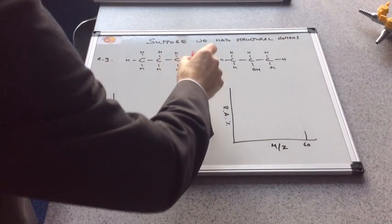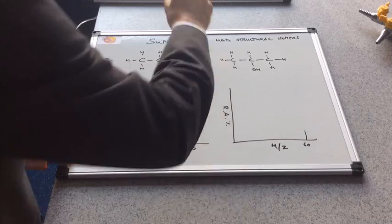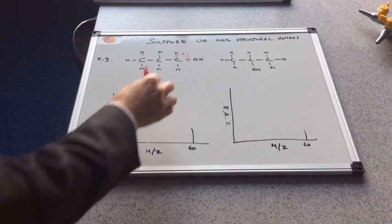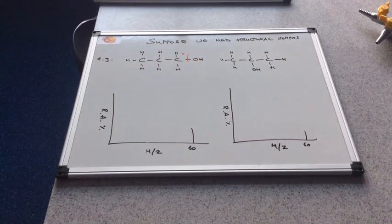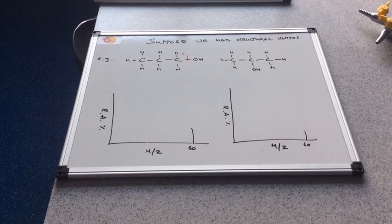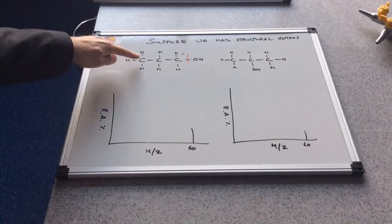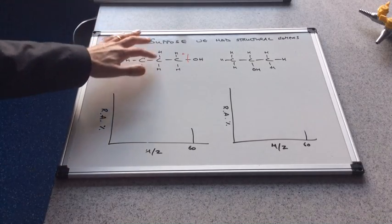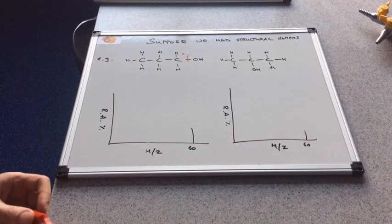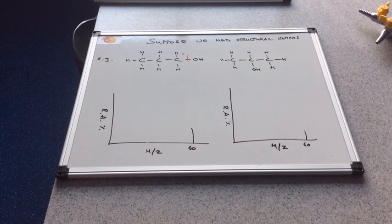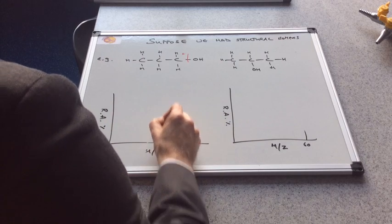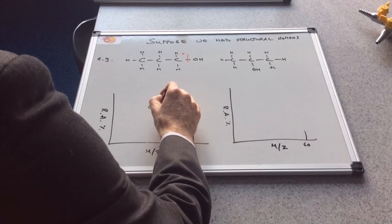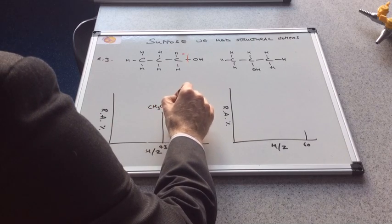We need to be thinking about what fragments are on one of the isomers that wouldn't be present on the other one. We're going to use those fragment peaks to distinguish between the two. Let's suppose we fragment here. We'll give this fragment the positive charge. This would be effectively a propyl fragment. If we think about the MR of that, that's 36 for those three carbons, 37, 38, 39, 40, 41, 42, 43. So we would see a fragment peak at 43. That's due to CH3, CH2, CH2+.